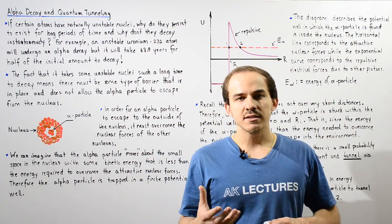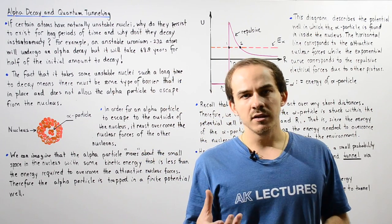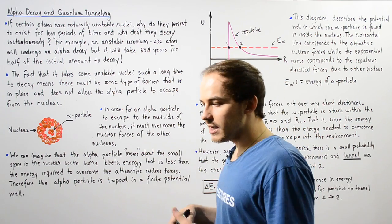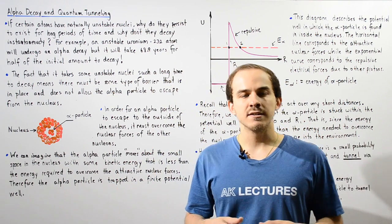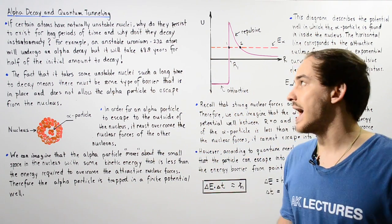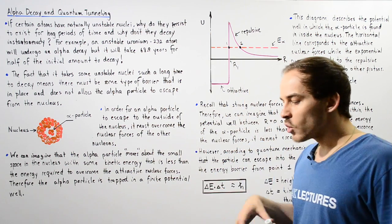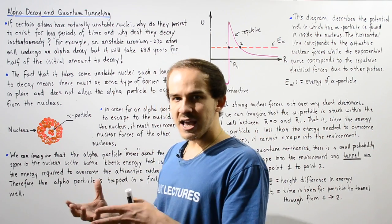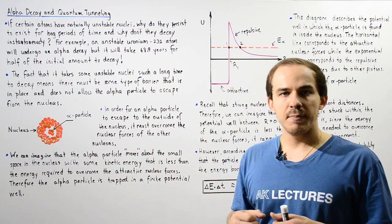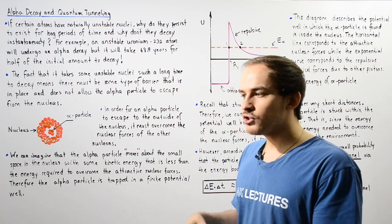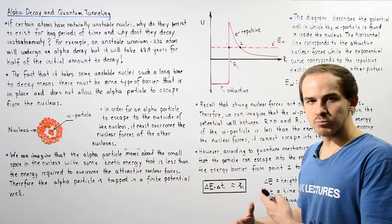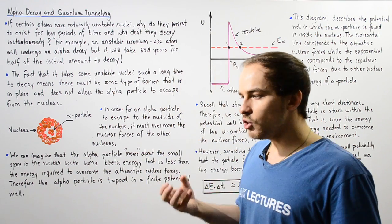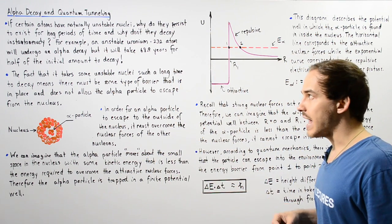Up to this point, we discussed the instability of certain nuclei of atoms and the idea of radioactive decay. We looked specifically at alpha decay, which takes place when a nucleus is unstable and disintegrates into a more stable atom, releasing an alpha particle from the nucleus of that unstable atom in the process.